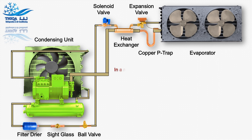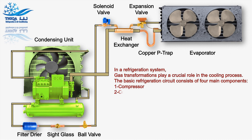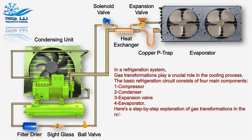In a refrigeration system, gas transformations play a crucial role in the cooling process. The basic refrigeration circuit consists of four main components: compressor, condenser, expansion valve, and evaporator. Here's a step-by-step explanation of gas transformations in the refrigeration circuit.